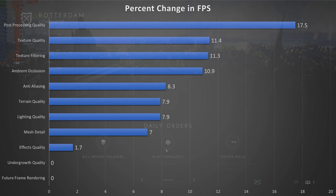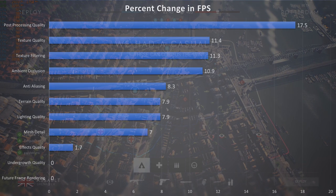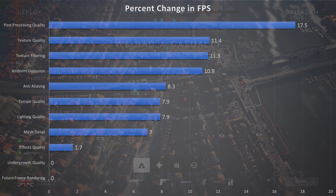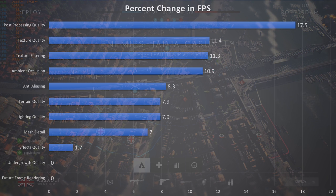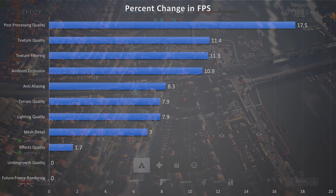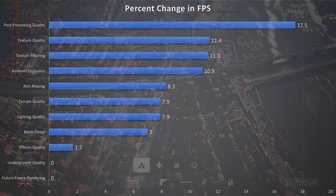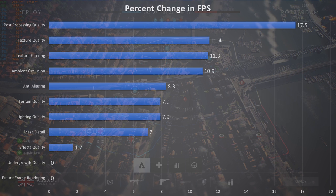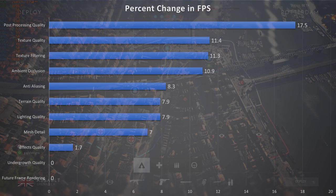We'll see no change with future frame rendering or undergrowth quality. With effects quality, you'll see about a 1.7% change in FPS, which is basically within margin of error. Mesh detail gives you a 7% change in FPS. Lighting quality is about an 8% change, along with terrain quality. Anti-aliasing has about an 8.3% change in FPS, and ambient occlusion has a 10% change. Texture filtering has an 11.3% change in FPS, and texture quality is another roughly 11% change in FPS.